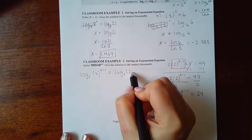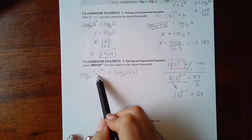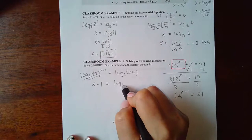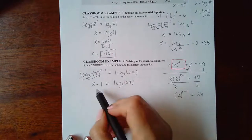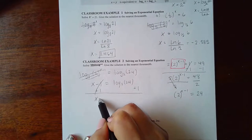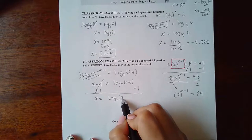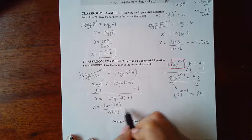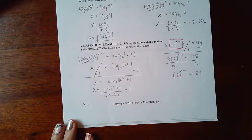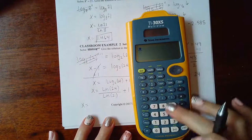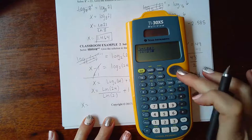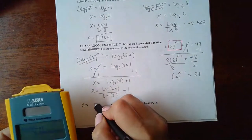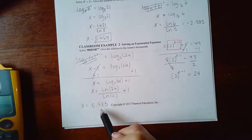Log base 2 on both sides: on the left, log base 2 and the exponential base 2 cancel, leaving just the exponent x minus 1. On the right I have log base 2 of 24. Since x is not yet solved for, I add 1 to both sides. Then using the change of base formula: ln of 24 over ln of 2, plus 1. Typing that in the calculator and rounding to the nearest thousandth gives x = 5.585.